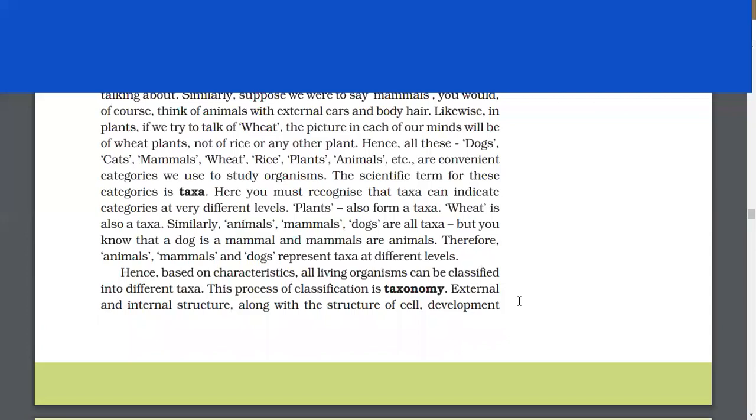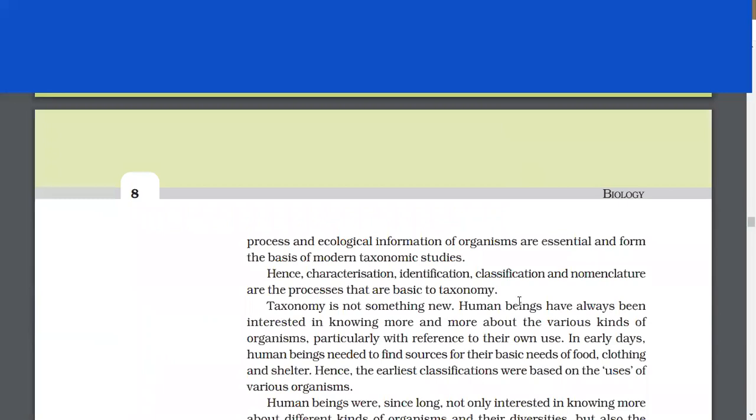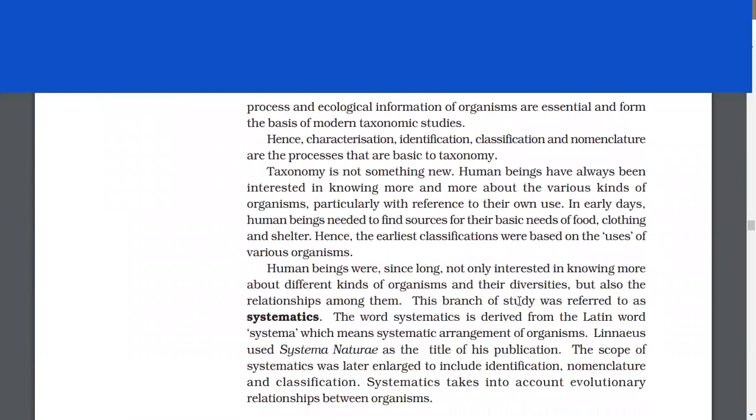External and internal structure, along with the structure of cell, development, process, and ecological information of organisms are essential and form the basis of modern taxonomic studies. Hence, characterization, identification, classification, and nomenclature are the processes that are basic to taxonomy.